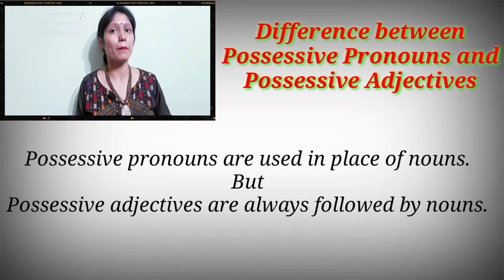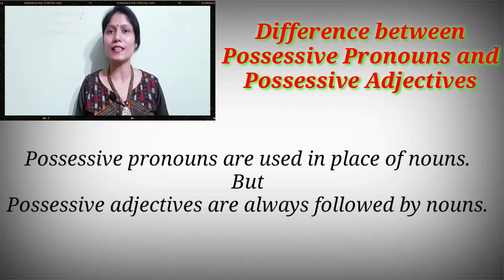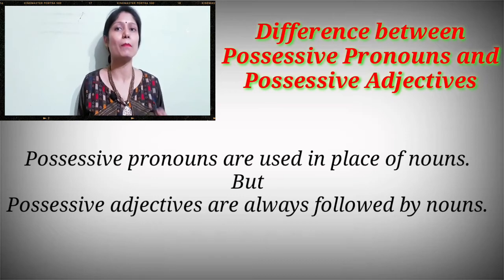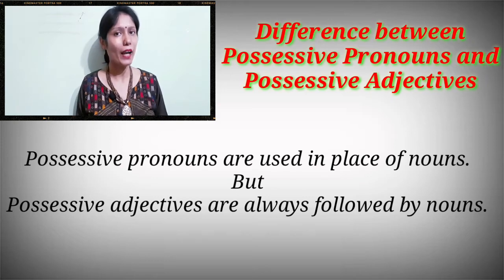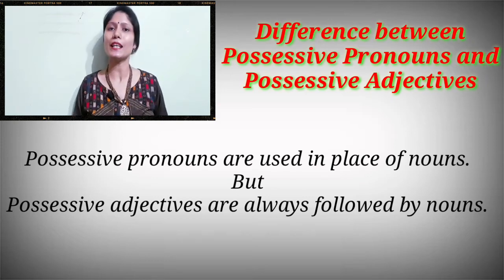For example, 'my book' — you cannot say 'this is my' — that is a wrong sentence. We have to say 'this is my book.' And if I want to use a pronoun, I will say 'this book is mine.'